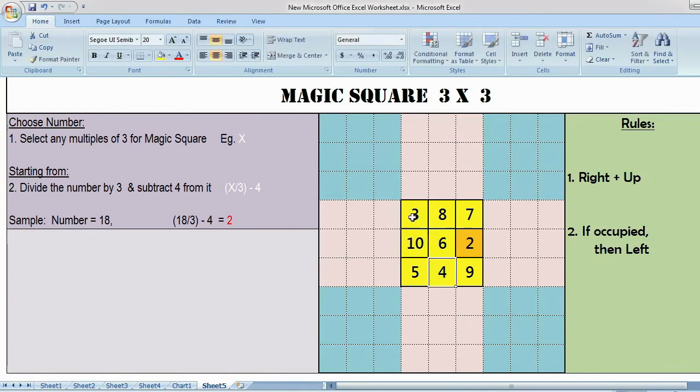Now we will do a summation. 3 plus 8, 11, plus 7, 18. Then 10 plus 6, 16, plus 2, 18. Then 5 plus 4 plus 9, 18. Then 3 plus 6, 9, plus 9, 18. 7 plus 2, 9, plus 9, 18. 8 plus 6, 14, plus 4, 18.